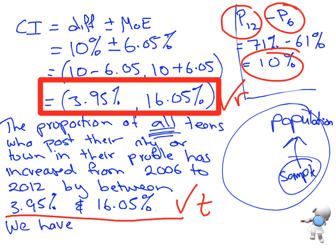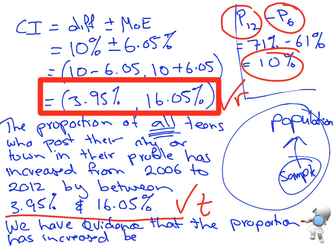We have evidence that the proportion has increased because zero is not inside the confidence interval. And then we get through to our excellence.